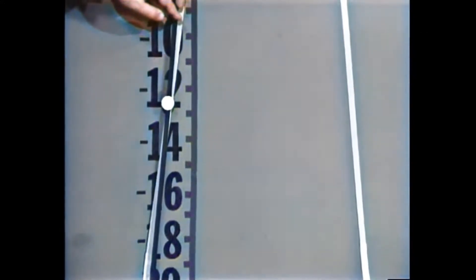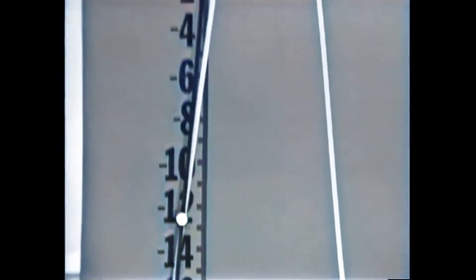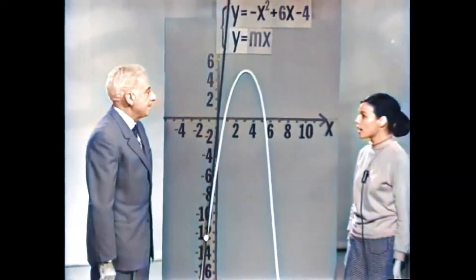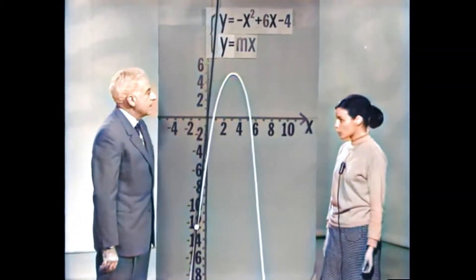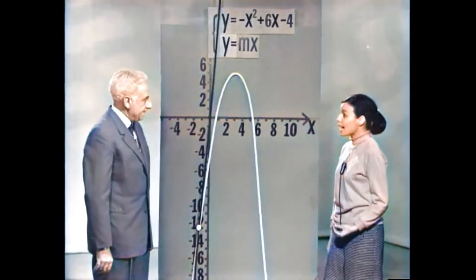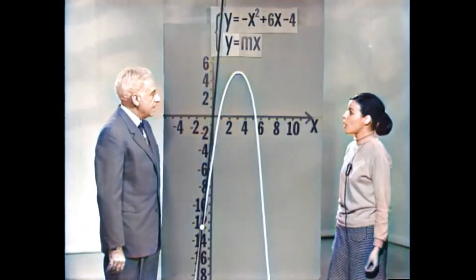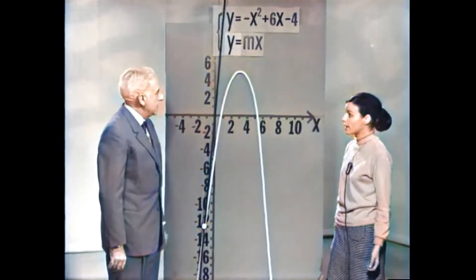אותו פתרון אלגברי שראינו, אפשר לתאר ולעקוב אחריו באופן גיאומטרי. אבל עדיין לא גמרנו את כל הסיבוב עם הישר — התחלנו משיפוע שלילי ועשינו כמעט את כל הסיבוב, אבל דילגנו על המצב שבו הישר מתלכד עם ציר ה-y.